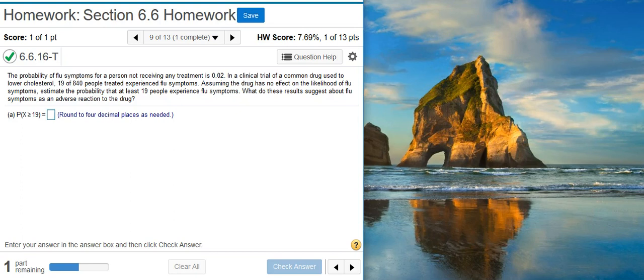Part A of this problem asks us for the probability that at least 19 people from our sample experience flu symptoms. Now, normally, pun intended, we would use a normal distribution to solve a problem like this. But notice in the problem statement, we don't get any information about a mean or a standard deviation for our distribution. So what information are we given? Well, we're given a probability of quote-unquote success, and then we're given a proportion of our sample. So what we're going to do with this information is use the binomial distribution as an approximation for the normal.